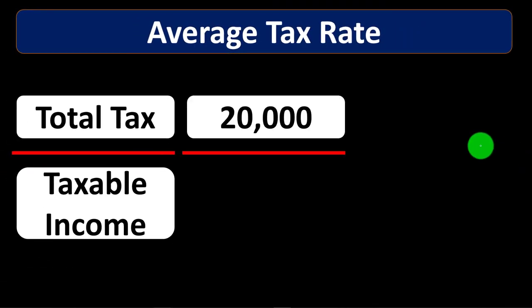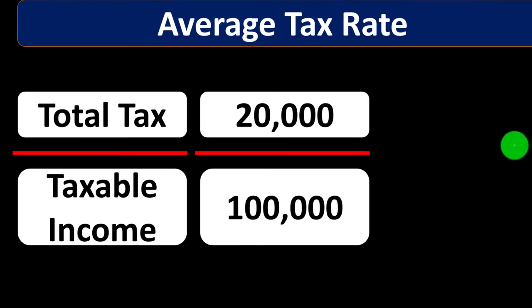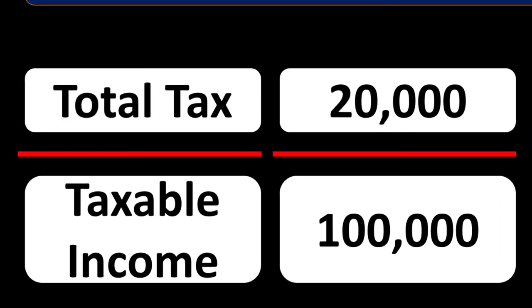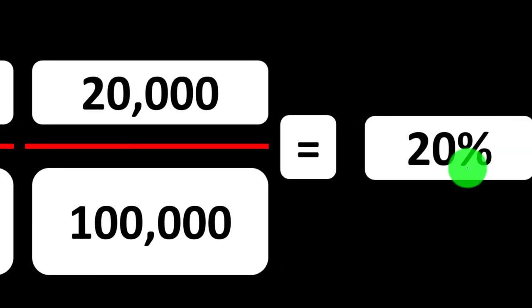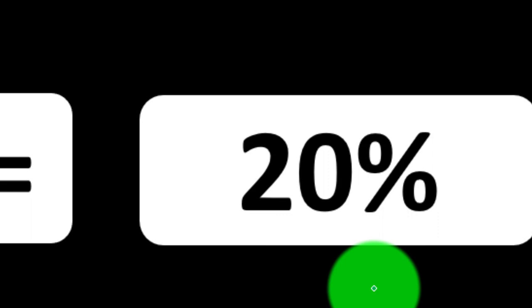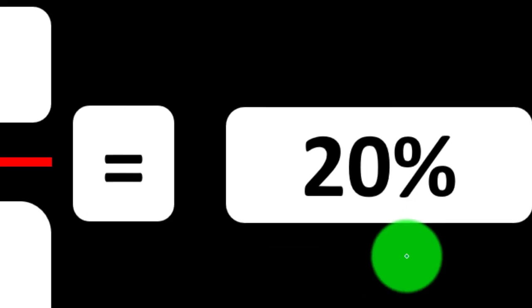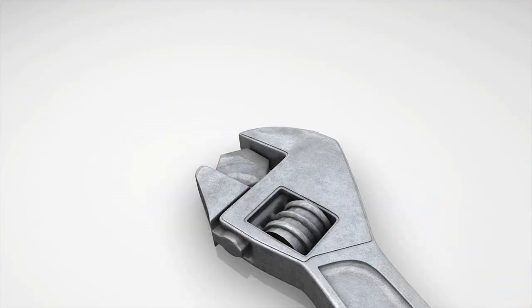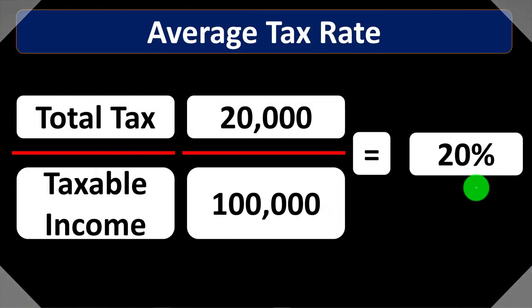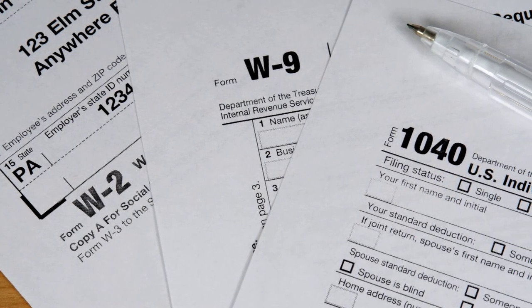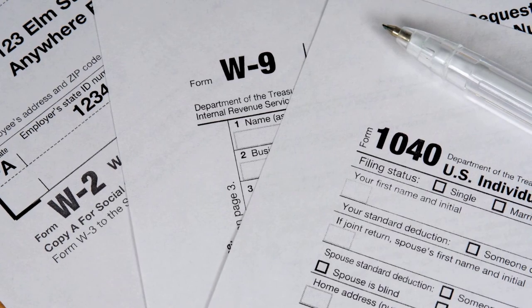Taxable income is a somewhat confusing term in itself — it's the income you earned minus the deductions you have, basically the income statement. Some of those deductions aren't really expenses you needed to incur to generate the income. So even that is a little bit confusing in terms of what you're actually paying. But that's one method — you can say this is my taxable income compared to my tax. For example, if I had total tax of $20,000 and taxable income of $100,000, your average tax would be 20%.